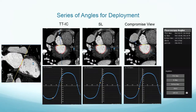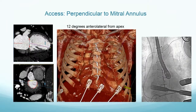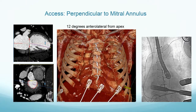You create angles and can have the TT view, which is almost never achievable in the cath lab. The SL view, except lateral, is often achievable. You also create a compromise view to give people options in the cath lab. Then you can create an image perpendicular to the valve directly — almost always in the anterolateral wall above the apex — and superimpose this on a VRT to show what was used for the actual placement.